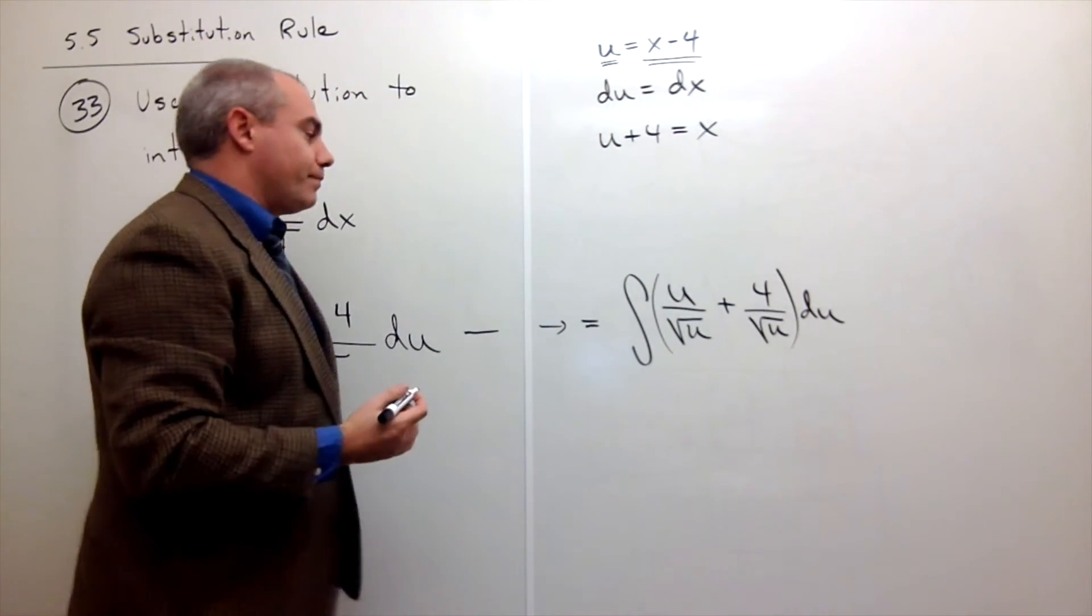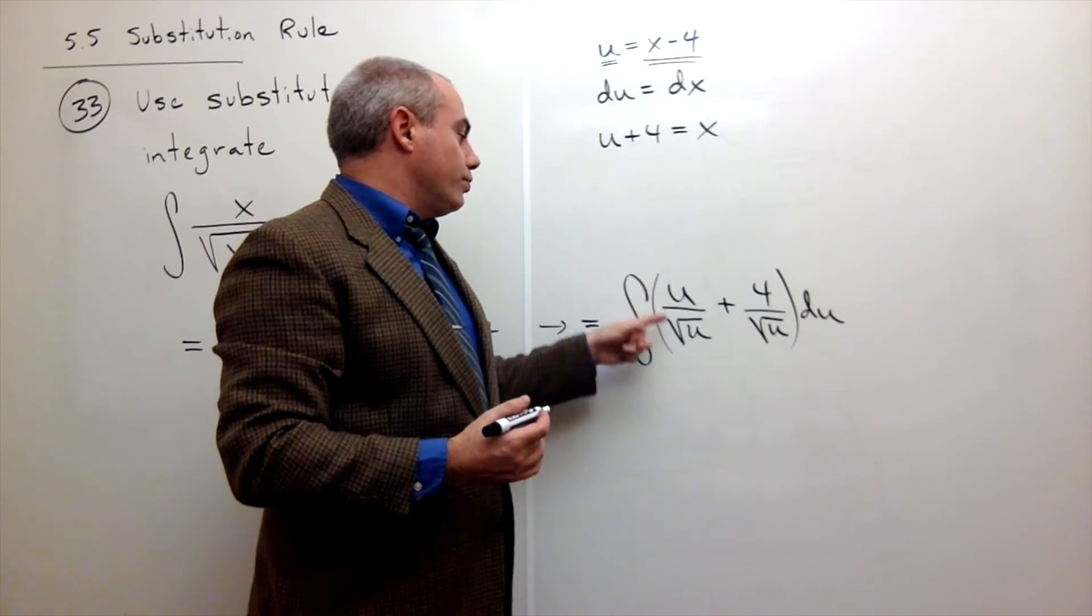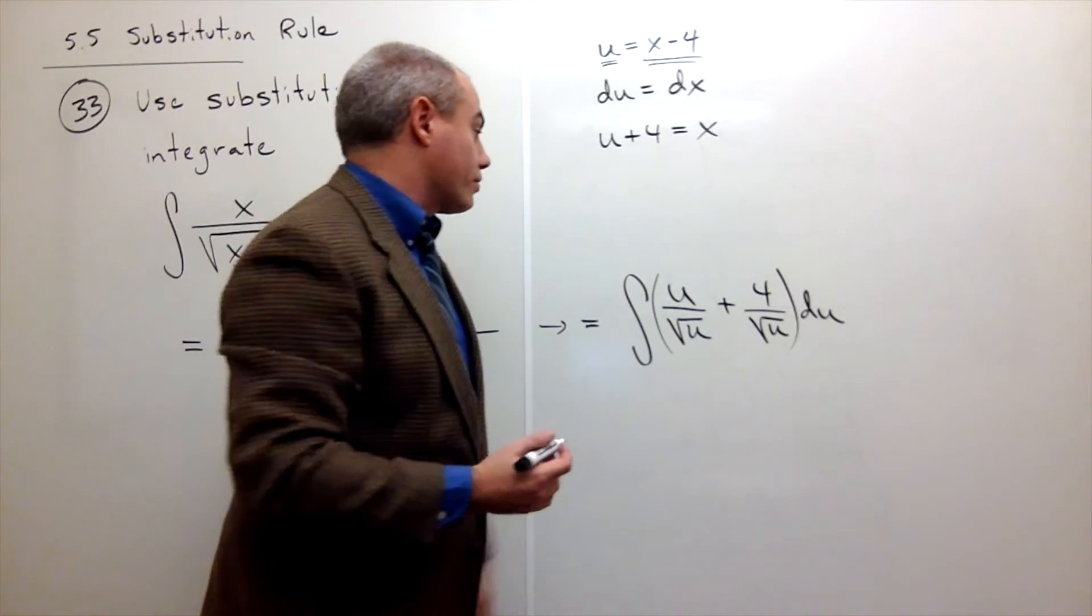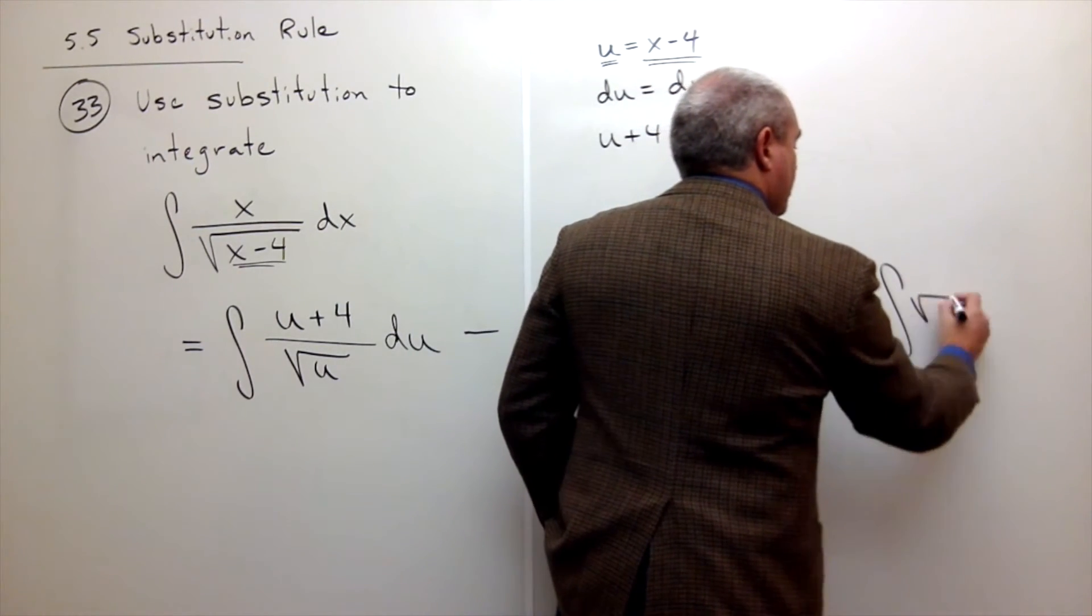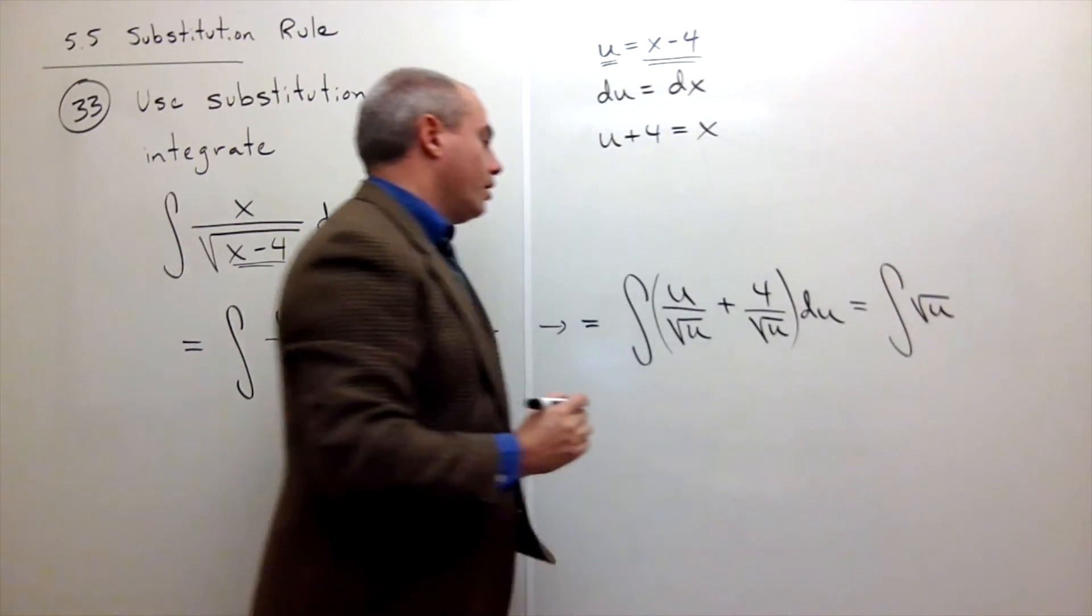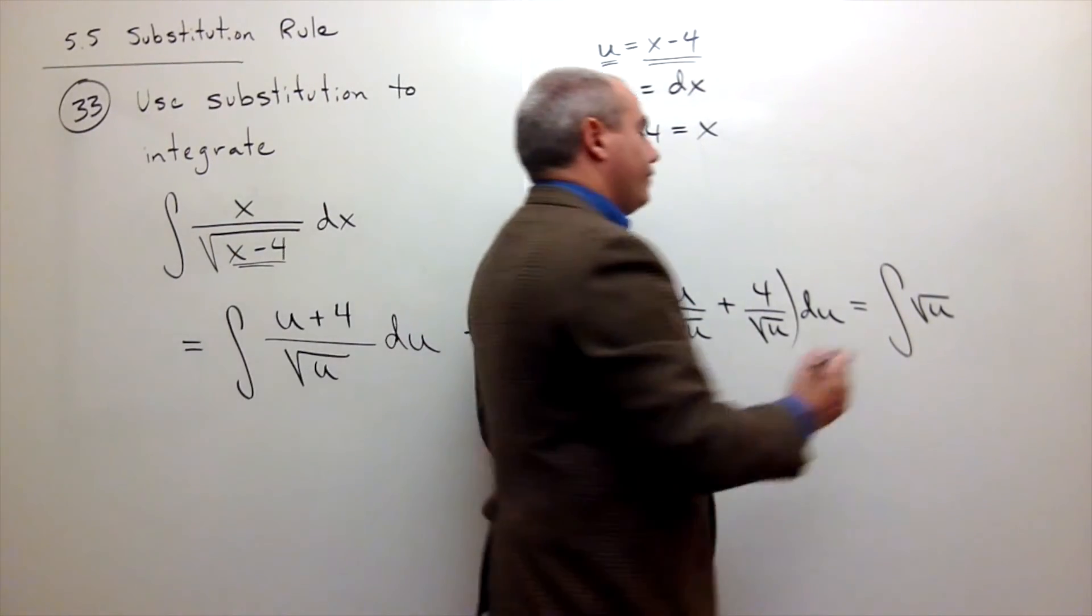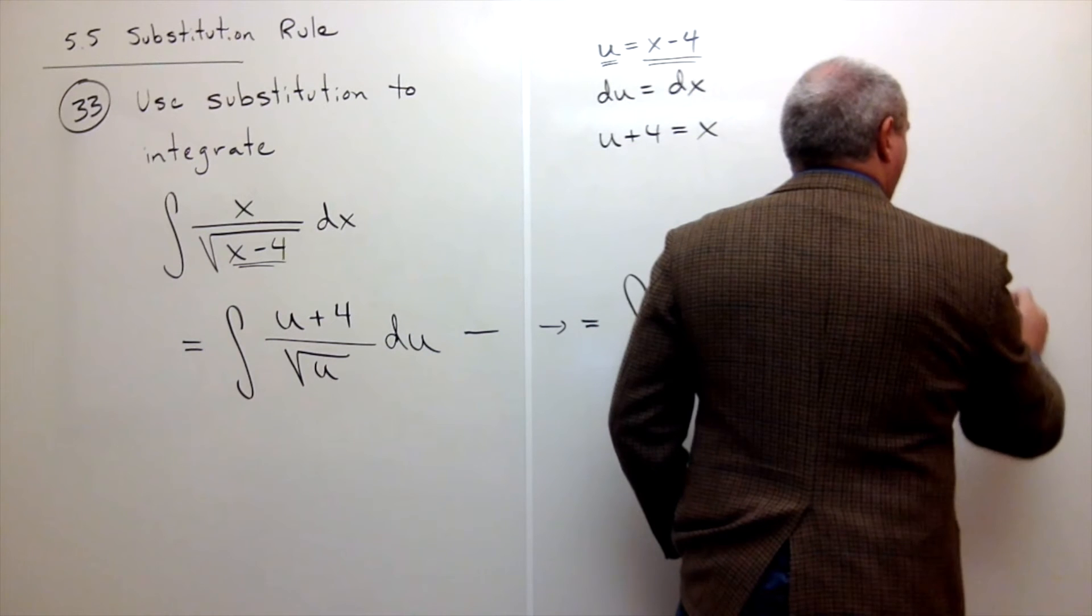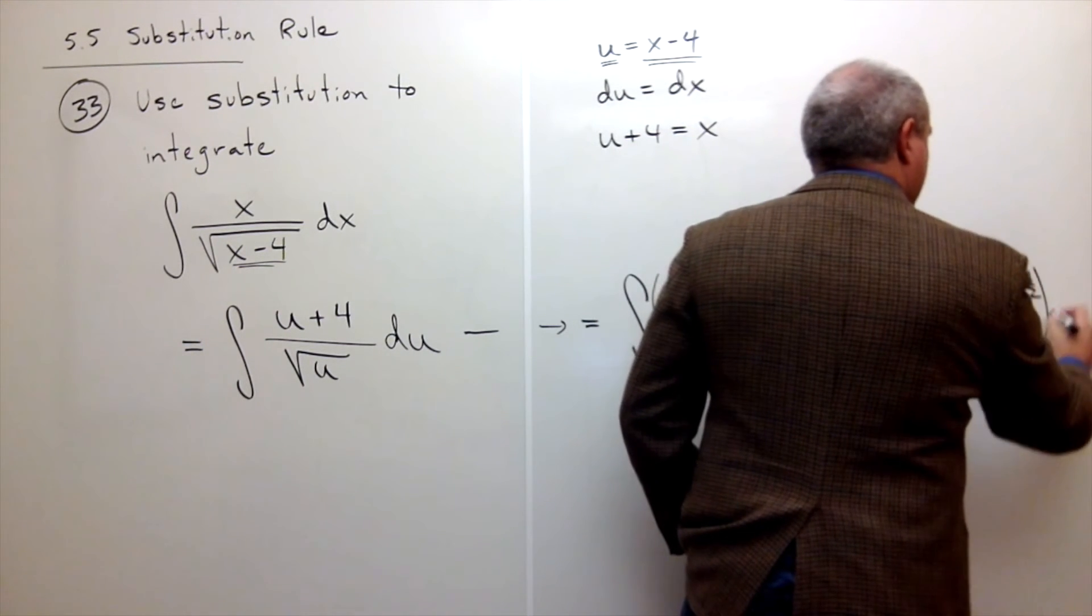I could simplify it a little more. u over the square root of u is just the square root of u. So this is the integral of the square root of u. And then this is plus 4 over square root of u. And if you prefer, that's 4u to the minus 1/2 du.